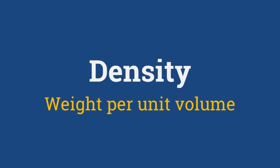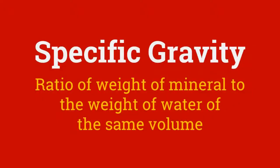Density is the weight of a mineral divided by its volume and has SI units of kg per meter cubed. Specific gravity, on the other hand, is a ratio — the weight of the mineral divided by the weight of water of the same volume. Since it is a ratio, it has no units.